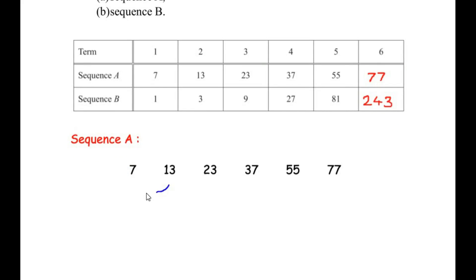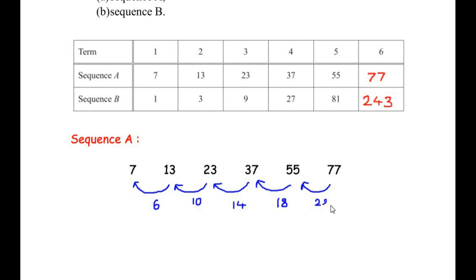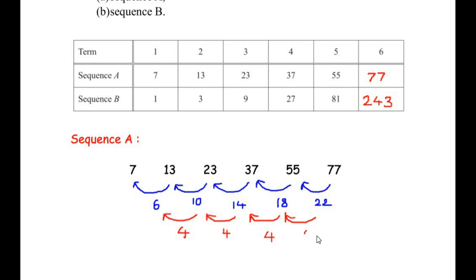Finding the first differences: 13 minus 7 is 6, 23 minus 13 is 10, 37 minus 23 is 14, 55 minus 37 is 18, and 77 minus 55 is 22. Since the common difference is not the same, we subtract again to find the second differences: 10 minus 6 is 4, 14 minus 10 is 4, 18 minus 14 is 4, and 22 minus 18 is 4.